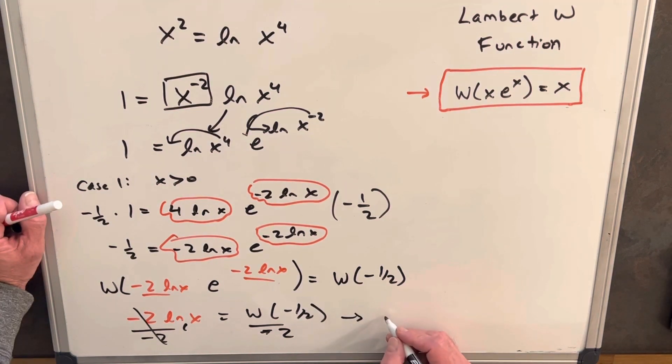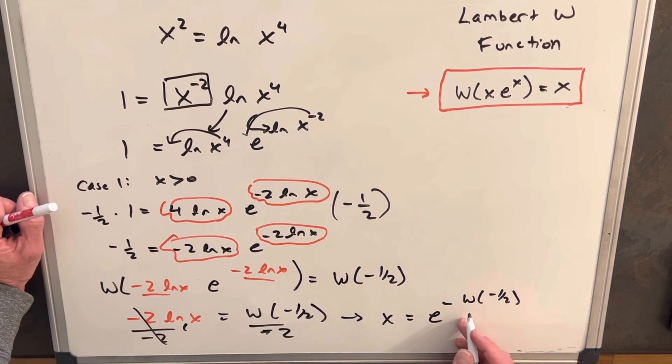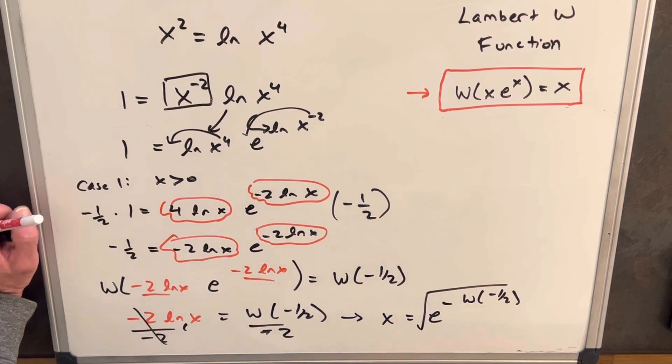So then we're going to have x equals e to the minus W of minus 1/2. And then I think I'll take this half and rewrite it as a square root around the whole expression.